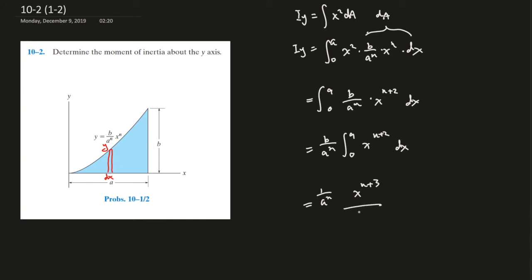x to the power of n plus 3 over n plus 3, and this is from 0 to A. Right? And now this would be 1 over a to the power of n, b over here, and x.